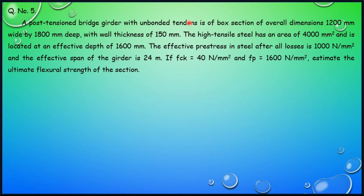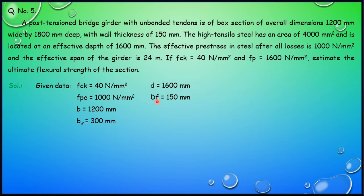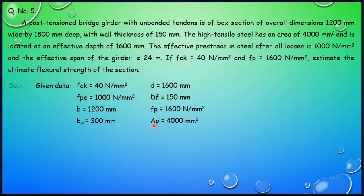Again, this is a post-tensioned bridge with unbonded tendons, so we use Table 12 of IS1343, page 60. Given data: FCK = 40 N/mm², FPE = 1000 N/mm², B = 1200 mm. The wall width for each wall is 150 mm, so total wall width BW = 300 mm. Effective depth D = 1600 mm, flange depth DF = 150 mm, and AP = 4000 mm².